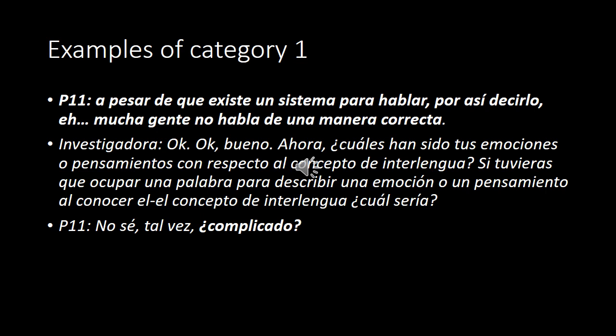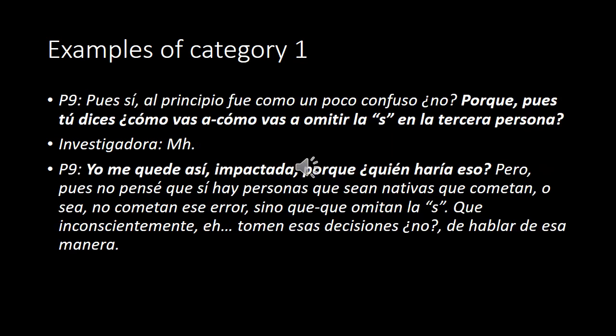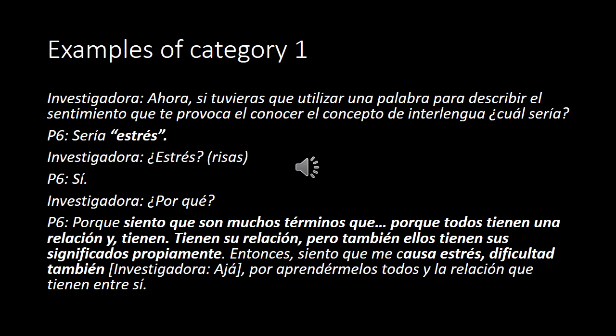Here we have an example of the first category where the student insists that there is one correct way to speak, and also says that the concept of interlanguage is a complicated concept. A common misunderstanding in this category was to think of interlanguage not as the linguistic system in a learner's cognition, but rather as a system that helps you learn, which is inaccurate. Another example shows a learner who was scandalized because the teacher explained that in some native speaker varieties of English, the third person S in the present simple is not used. Another student expresses feeling stressed out by the concept of interlanguage because it involves several interrelated concepts and it is difficult to understand the connections among them, which is further evidence of the threshold nature of the concept.